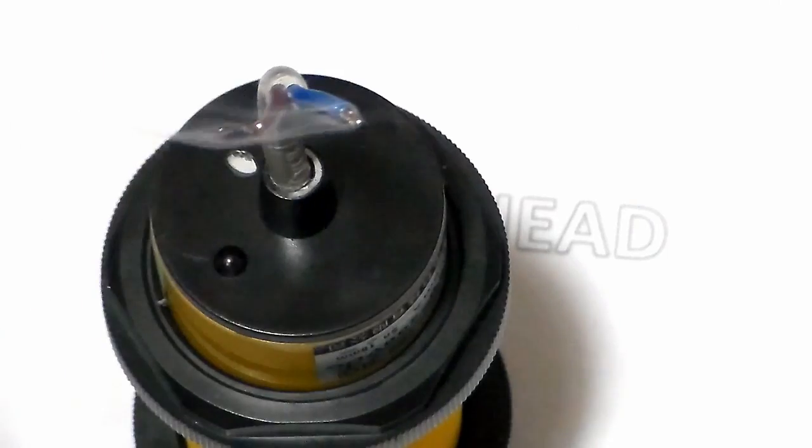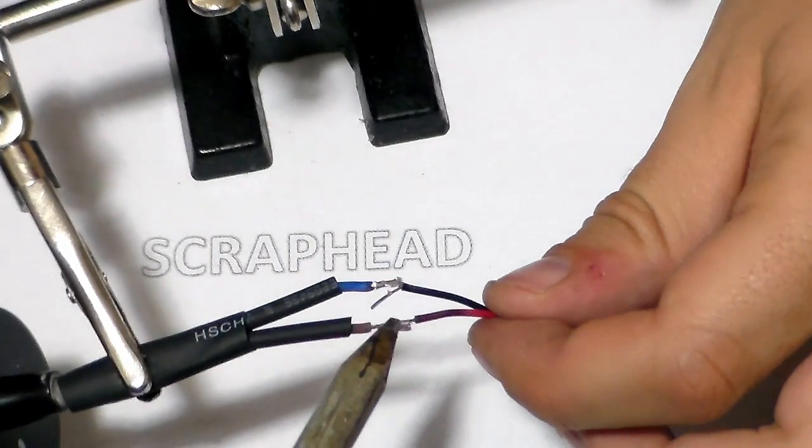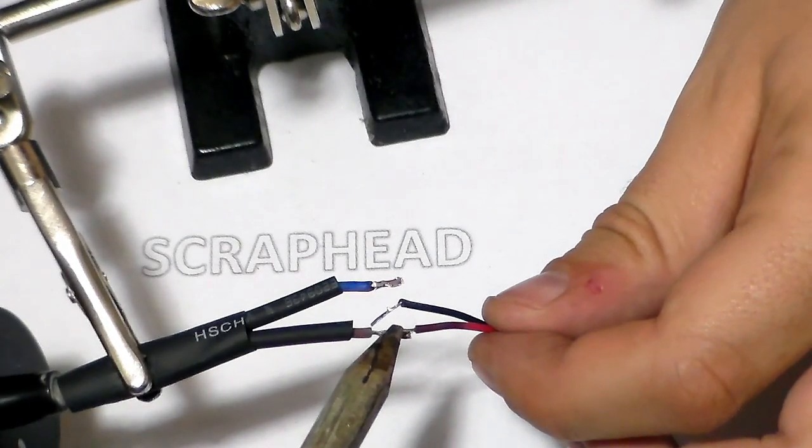Then I soldered together the battery clip and the sensor. Red goes to brown and black goes to blue.